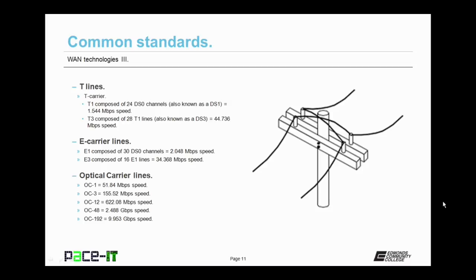If you want gigabit type speed, you might consider leasing an OC48. That gives you up to 2.488 gigabits per second in bandwidth. Currently at the top of the line is the OC192. That gives you up to 9.953 gigabits per second speed. So essentially, 10 gigabits per second worth of bandwidth.